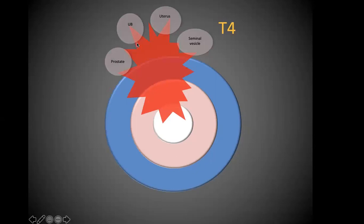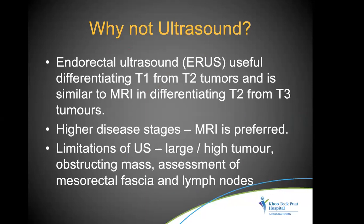T4 tumor involves surrounding structures like the urinary bladder, and depending on the patient, the prostate, uterus, or seminal vesicles.